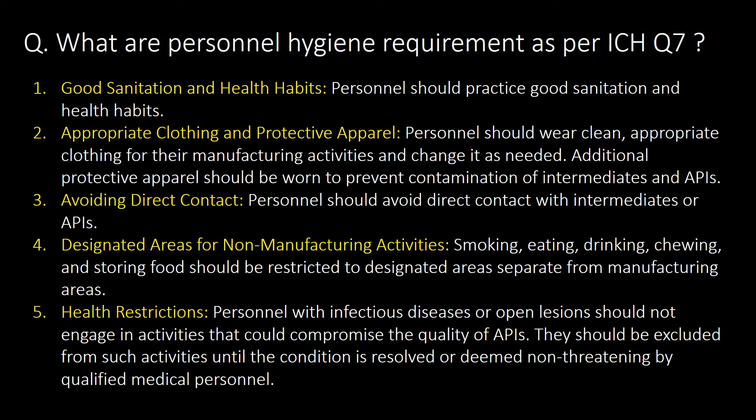What are the personal hygiene requirements as per ICH Q7 guideline? First, good sanitation and health habits. Second, appropriate clothing and protective apparel. Third, avoiding direct contact. Fourth, designated areas for non-manufacturing activities. And fifth, health restrictions.